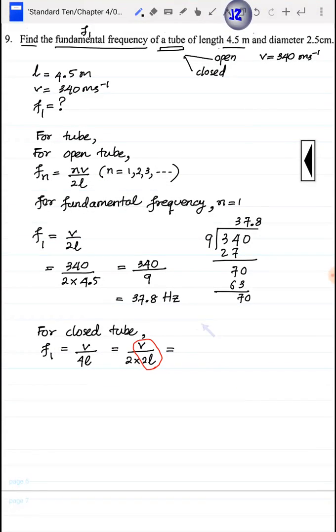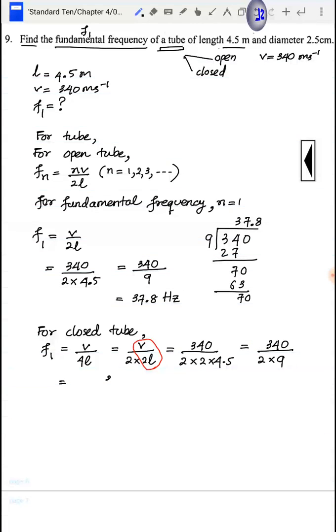Let me calculate this. We have 340 divided by 2 times 2 times 4.5. That gives us 340 divided by 2 times 9. The result is 37.8 divided by 2, which equals 18.9 Hertz.